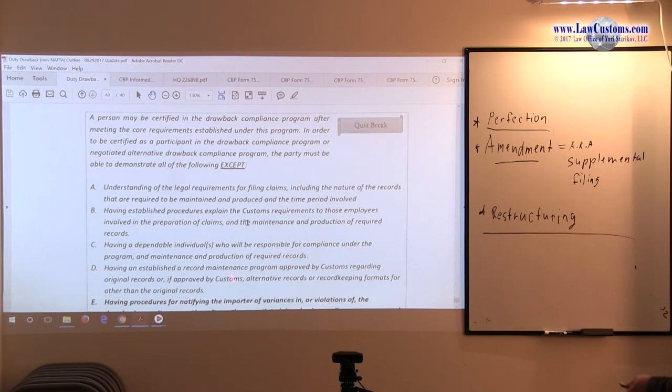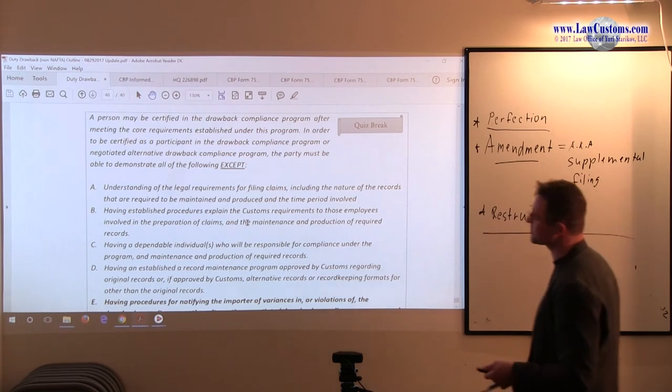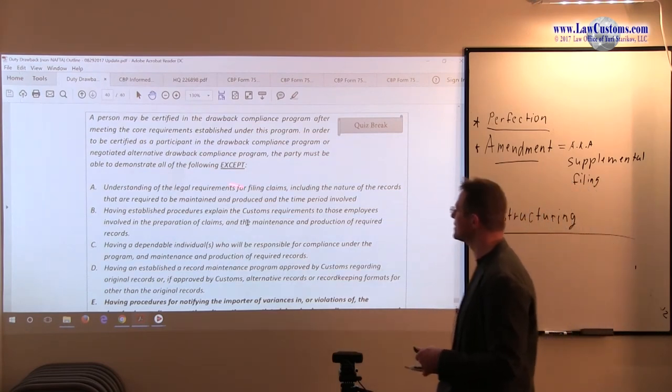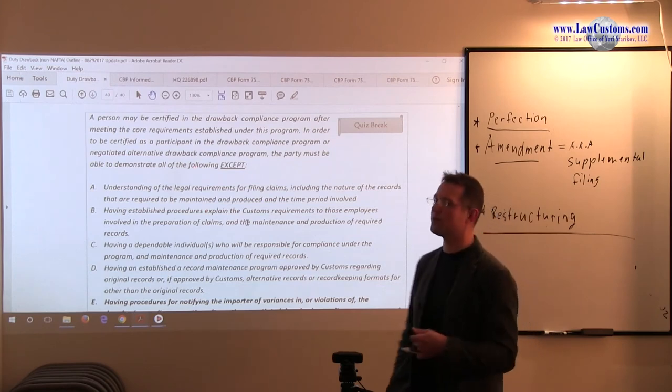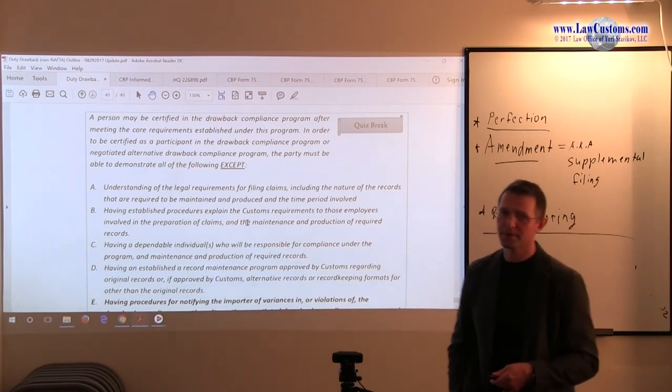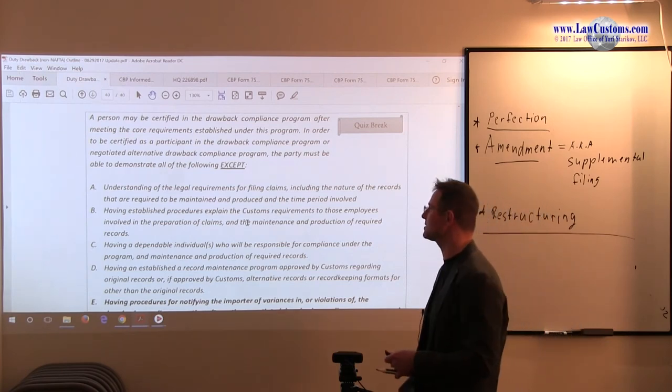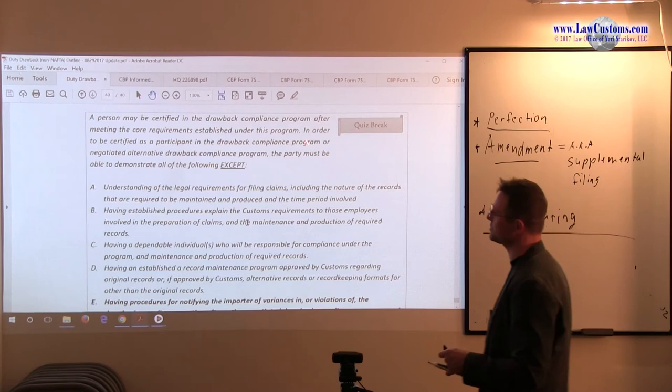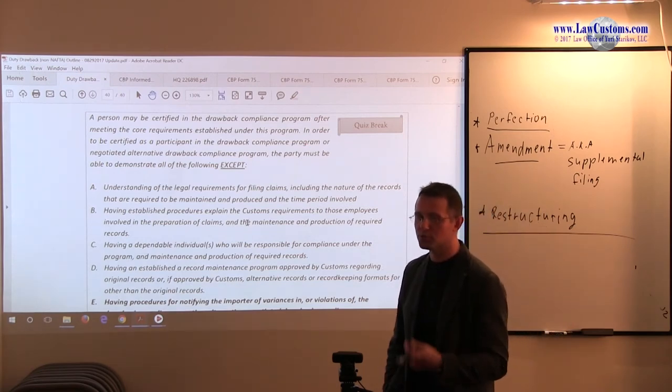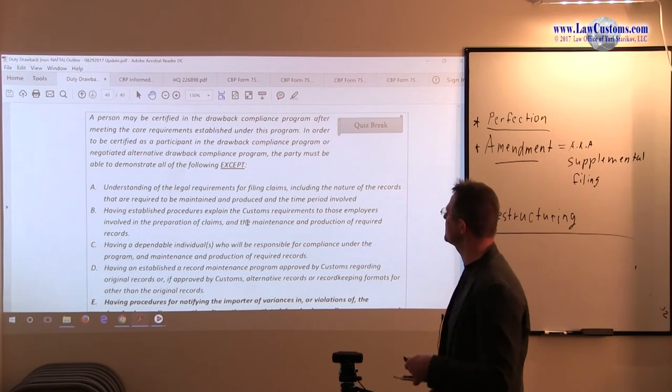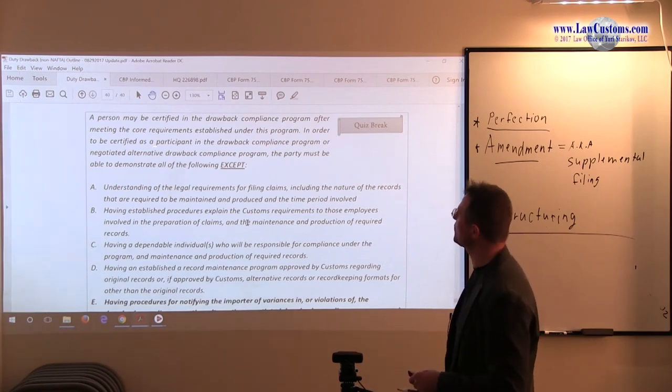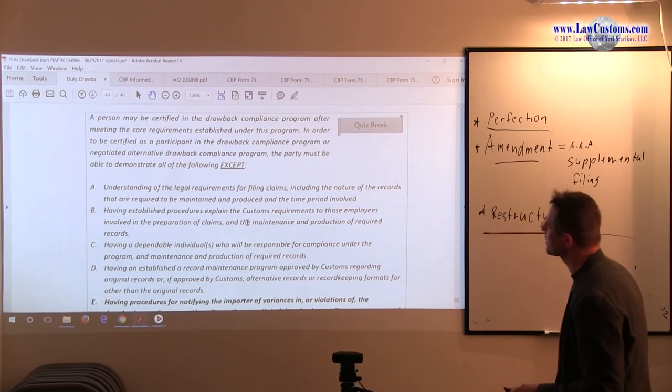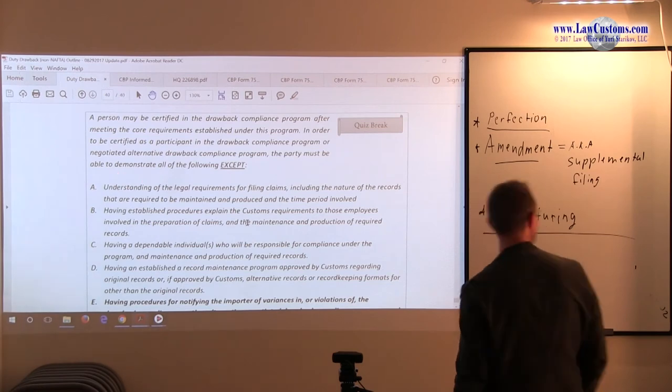So, again, a classic way for customers examiners to test you on the laundry list is to list you all the ones that qualify and then say, okay, give me the one which is false and exception. So, customers examiners in the past have asked with respect to Drobo compliance program the following question. A person may be certified for Drobo compliance program. So, immediately if you see Drobo compliance program buzzwords, you go to that list. So, in order to be certified as a participant, the party must be also able to demonstrate all of the following except.